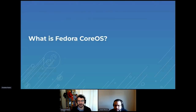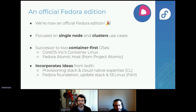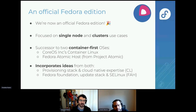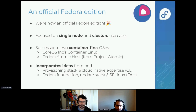Quick refresher on what Fedora CoreOS is. With Fedora 37 we are officially a Fedora edition. We focus on two main use cases: the single node use case where you spin up a single node and have function-as-a-server to run containers, or the second use case focused around containers running at scale across a cluster of nodes where you want all those nodes to use the same version.